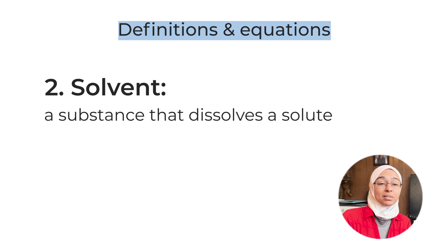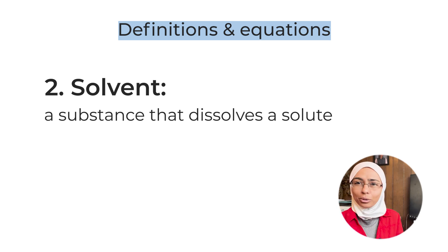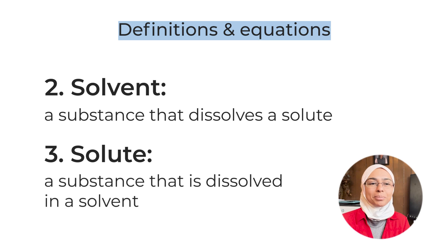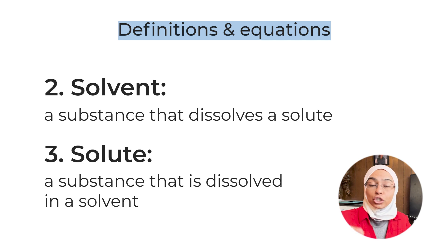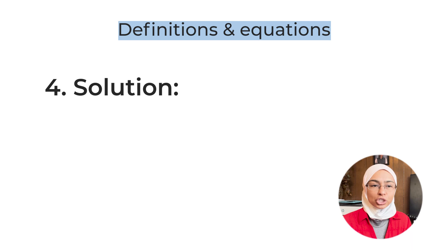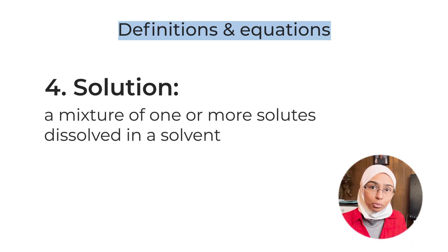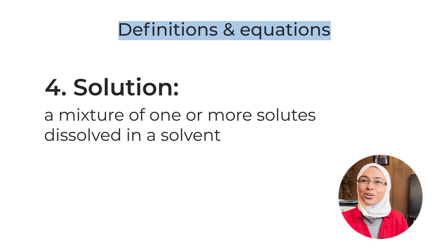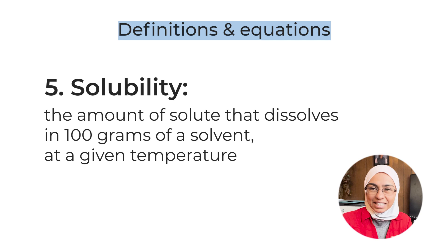Definition number two: solvent — a substance that dissolves a solute. Examples are water and ethanol. Number three: solute — a substance that is dissolved in a solvent, like sugar or salt. Number four: solution — a mixture of one or more solutes dissolved in a solvent. An example is seawater, which is a solution of sodium chloride.